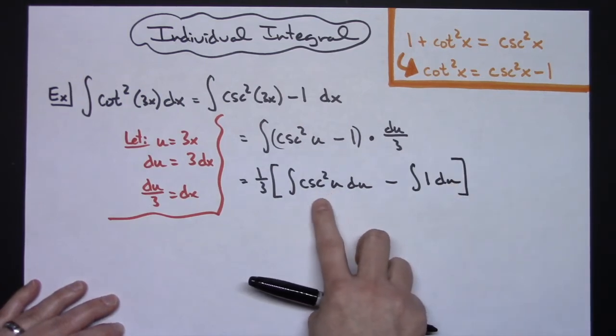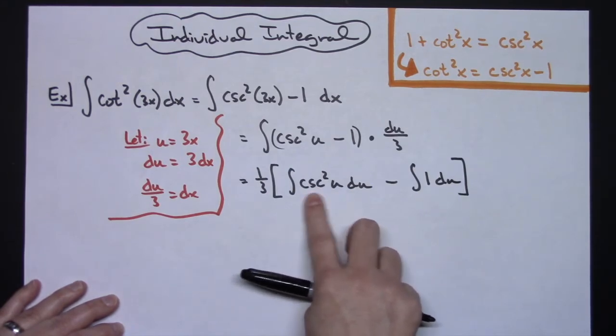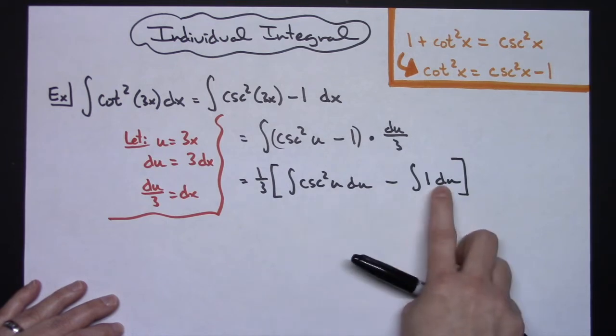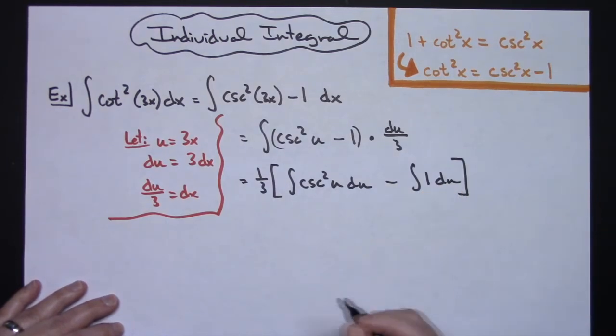Now what that's going to allow me to do here, at this point if you are in a Calc 1 class and you're working with integrals, this should be memorized as the negative cotangent u. And we integrate 1 with respect to u there is going to be just a straight u.